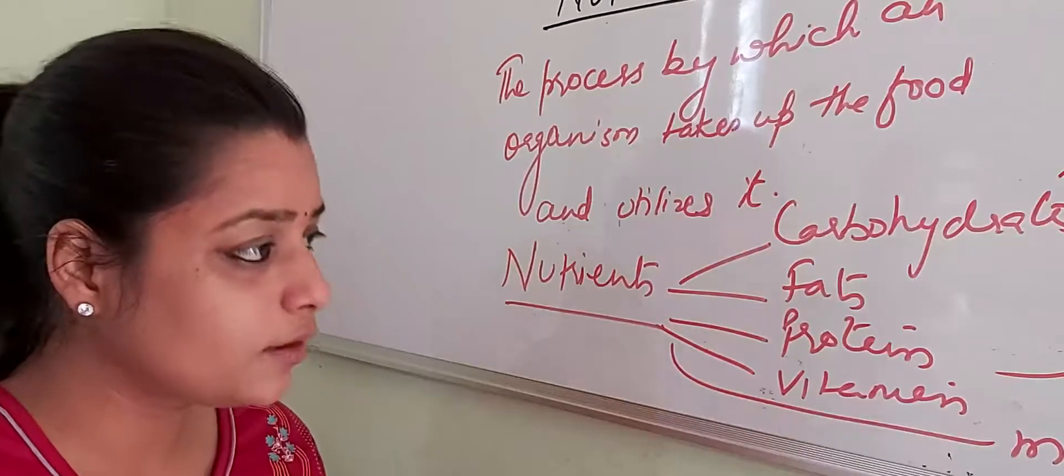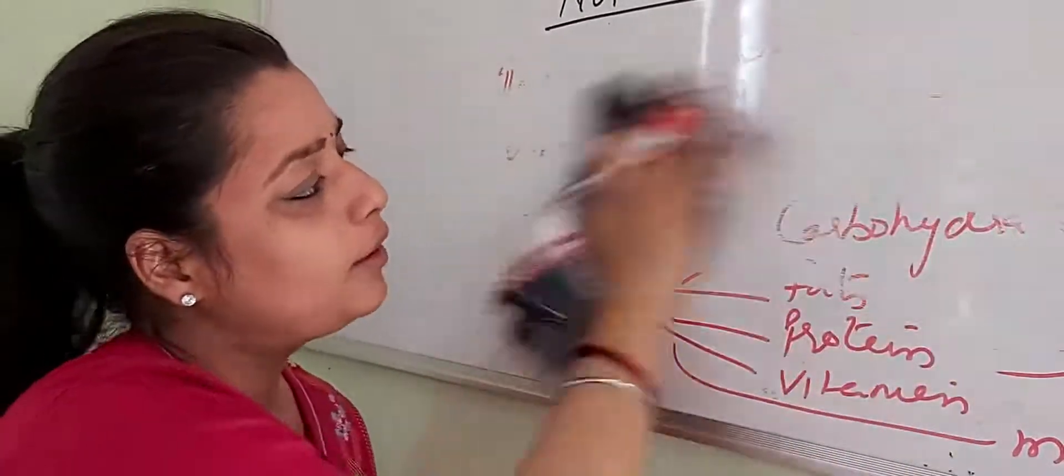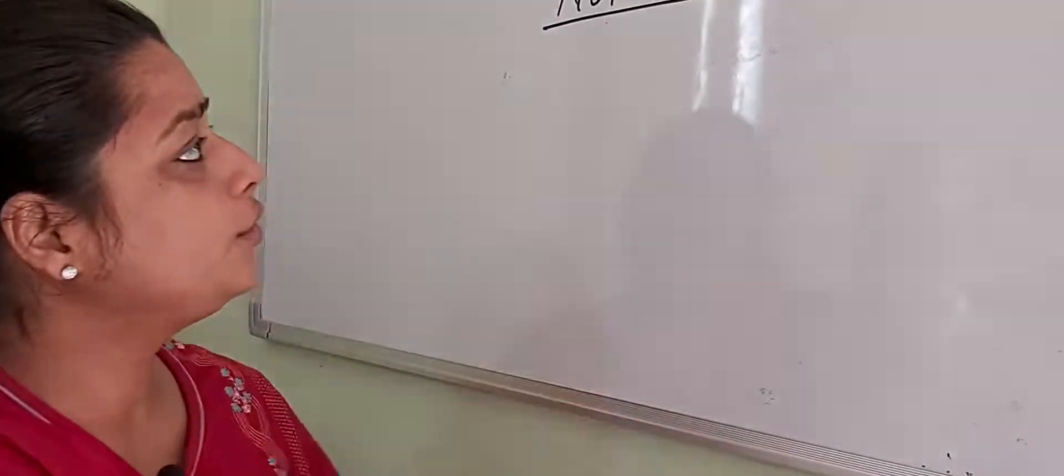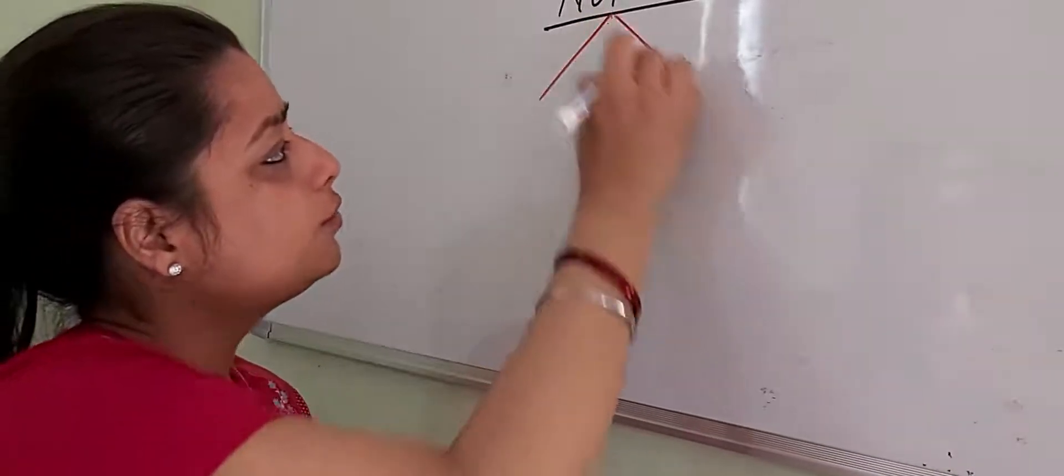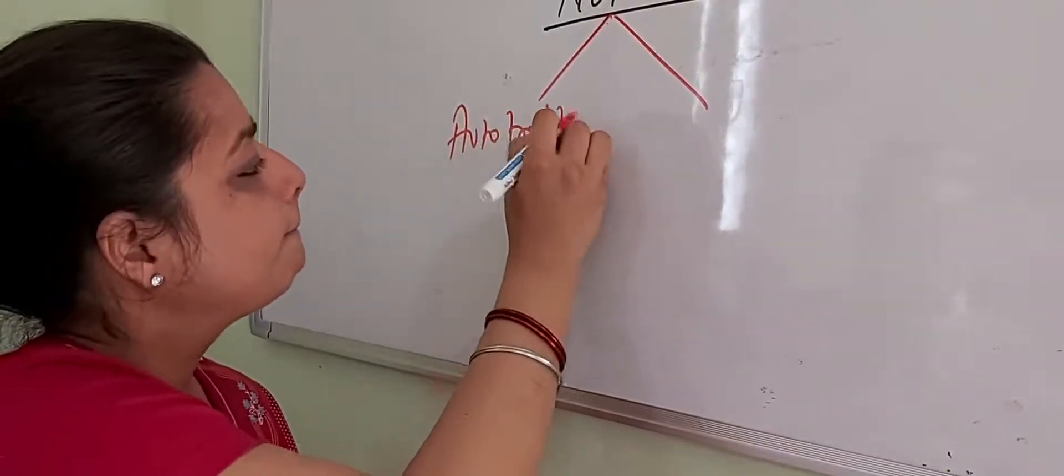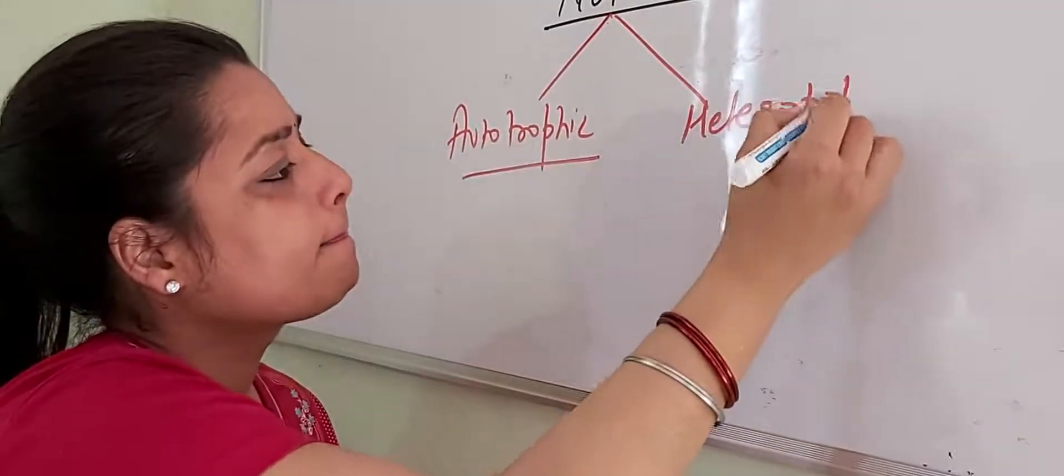Now, what are types of nutrition? When we talk about nutrition, there are different kinds. Nutrition can be broadly divided into autotrophic and heterotrophic.